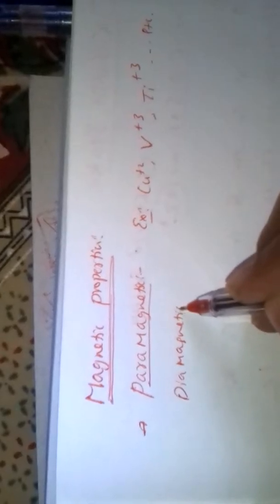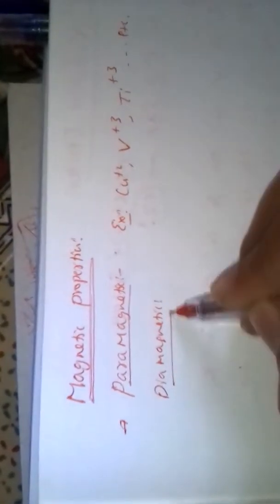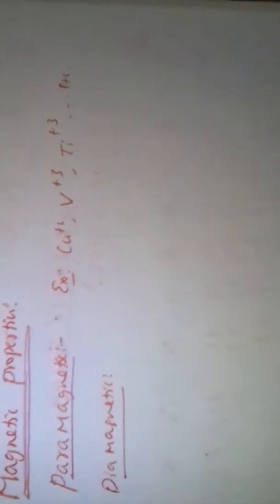Diamagnetic substances are those which are not attracted by the magnetic field but are weakly repelled by the magnetic field. These are called diamagnetic substances.